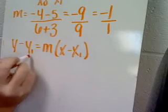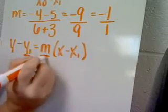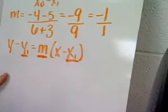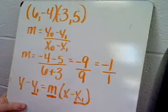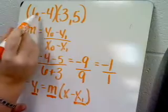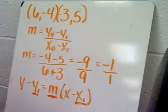We're going to substitute in a y-coordinate, a slope, and an x-coordinate, and then simplify. I'm going to choose to use the 6 and negative 4 as an equation.